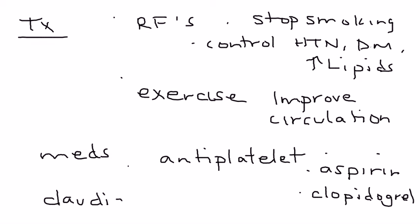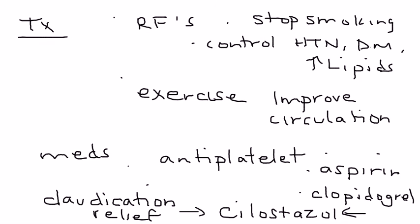Of those, the best one is cilostazol, very commonly used. Remember that. If it is very severe peripheral arterial disease, then you have to go in and either place a stent or do some sort of surgical procedure to help the situation.